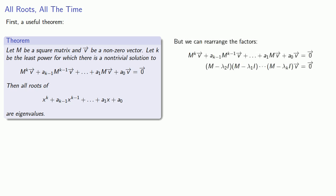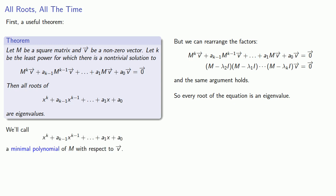But we can rearrange the factors, and the same argument holds. So every root of the equation is an eigenvalue. So for convenience, we'll call this polynomial a minimal polynomial of M with respect to our vector v.